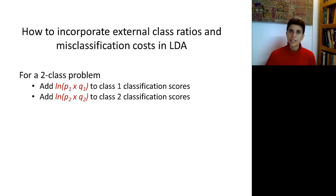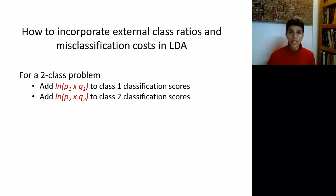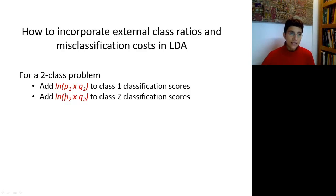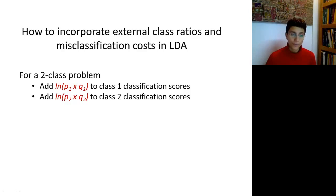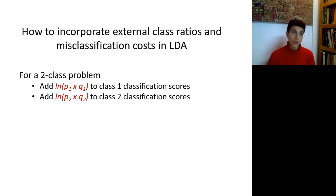Let's look at how we do this directly in LDA. Suppose we have a two-class problem where Y can only be yes or no. We have classification functions for each class, each with a constant. The way to incorporate costs and prior probabilities is to add log(P1 × Q1) to the constant of the classification function for class 1, and log(P2 × Q2) to the constant for class 2. Adding this quantity to the classification score is identical to adding it to the constant, since the score equals the constant plus all other components.